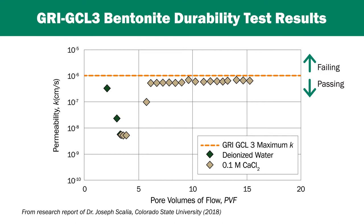As can be seen, the bentonite performed within the required parameters of the GRI-GCL3 specification. One should note that this test is to be conducted on a bentonite that does not contain polymer. Polymers can be added to enhance certain characteristics of a product, but for this test, we want to know the true hydraulic performance of the base bentonite. Whether the bentonite is in granular or powdered form, the quality of the bentonite should be known through accepted standard testing.